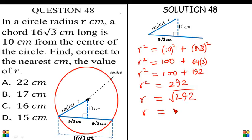So R is 17.088 thereabouts centimeters. To the nearest whole number, this is going to be 17 centimeters. That's option B. The correct answer is option B.